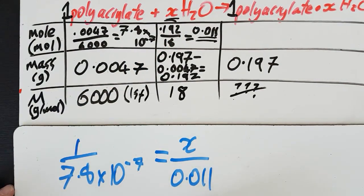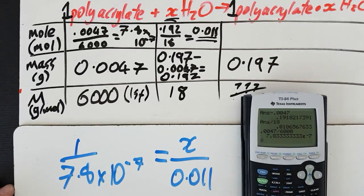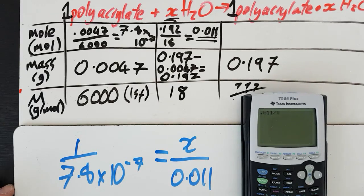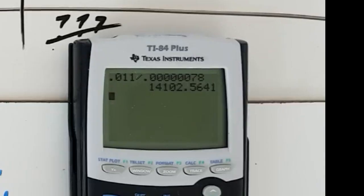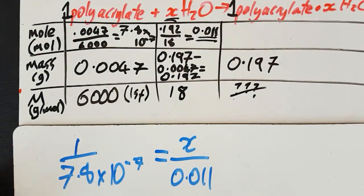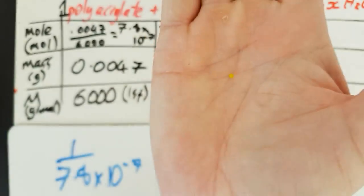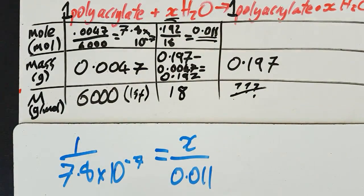Since the coefficients in the equation are proportional to the number of moles, you just have to do cross multiplication. Wow. So 14,000 to 1 sig fig actually is 10,000. So 10,000 molecules of water attach to each polyacrylate bead. That's mad considering how small they are. And we're done.